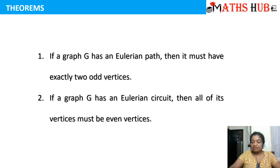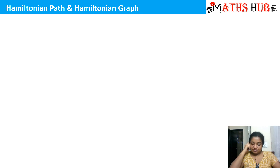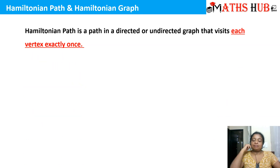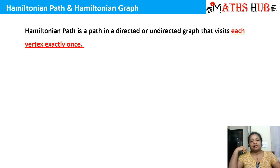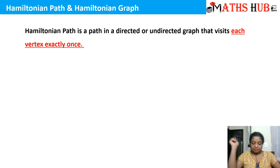I hope the definitions of Eulerian path, Eulerian circuit, and Eulerian graph are clear. Now let's move on to Hamiltonian path and Hamiltonian graphs. A Hamiltonian path in a directed or undirected graph visits each vertex exactly once. When we were talking about Eulerian, the restriction was on edges — edges exactly once. Now for Hamiltonian path, we have to cover all the vertices exactly once; you can cover the edges any number of times.